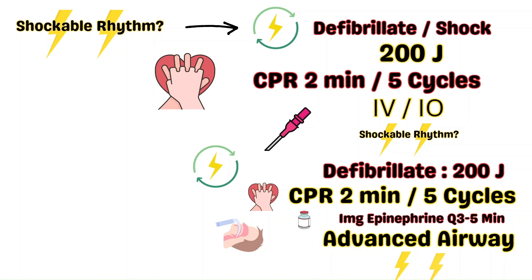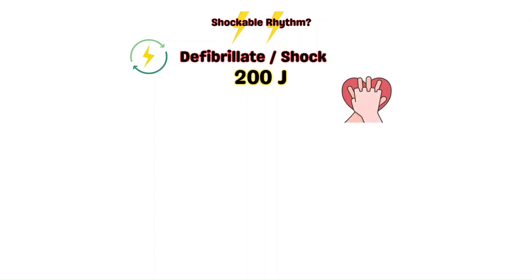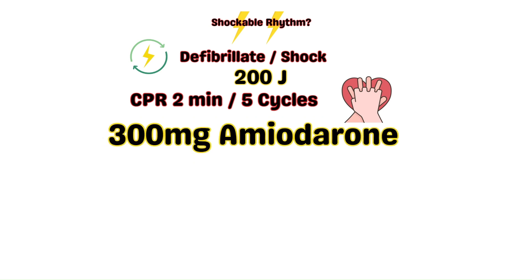After another two minutes of CPR, perform another pulse and rhythm check. Is it still shockable? If so, defibrillate at 200 joules and immediately resume CPR for two minutes. If not yet given, administer an antiarrhythmic such as amiodarone or lidocaine. Both reduce the irritability of heart cells, which helps terminate ventricular fibrillation and pulseless ventricular tachycardia. The first dose of amiodarone is 300 milligrams IV push; if a repeat dose is needed, 150 milligrams IV are given.